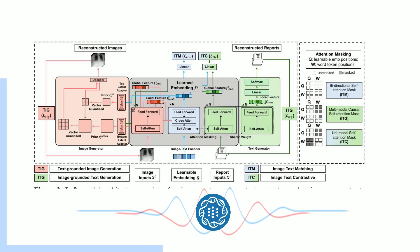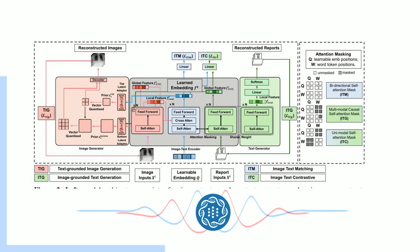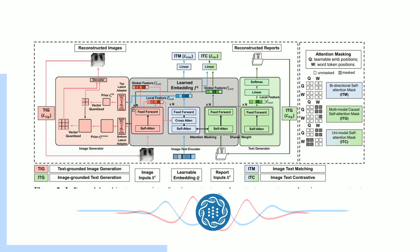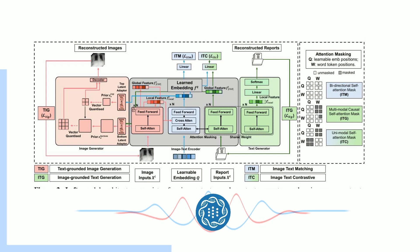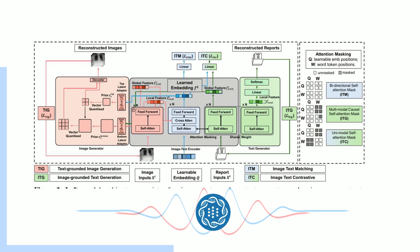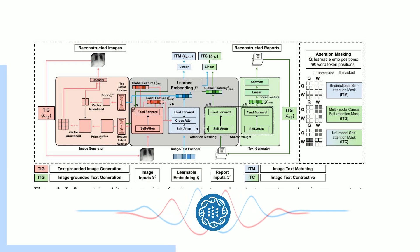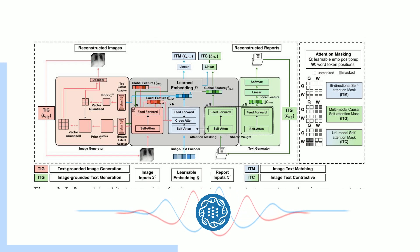The third objective is where things start to get really interesting: image-grounded text generation. This is where MedUnifier takes what it's learned from images and puts it into words — essentially learning to write medical reports based on what it sees in a scan. It's like an AI shadowing a radiologist, learning to articulate their observations in a precise and detailed manner.